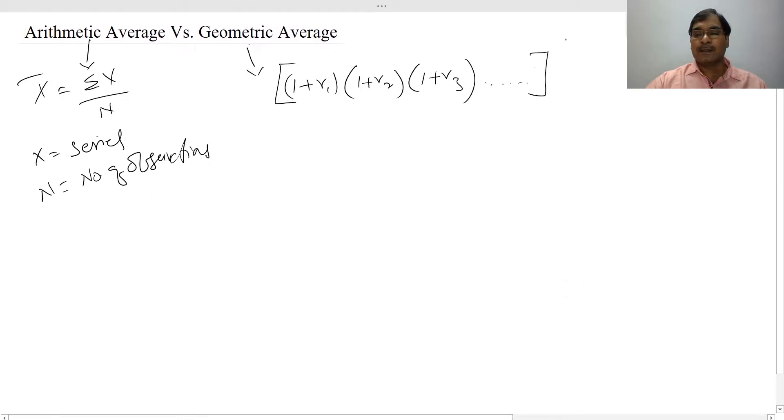The formula to calculate arithmetic average is denoted as x bar equals summation of x by n, where x is series and n is number of observations. Whereas to calculate the geometric average we use one plus r, one plus r1, then one plus r2, then one plus r3, likewise, then raise to the power one by t minus one. Here r is return in decimals whereas t is number of observations.